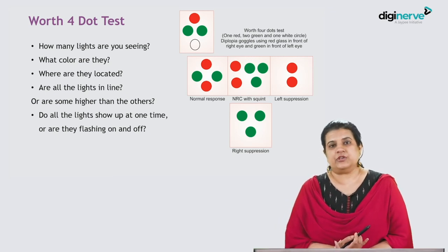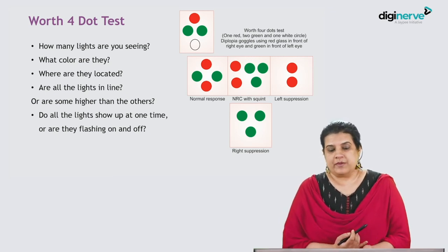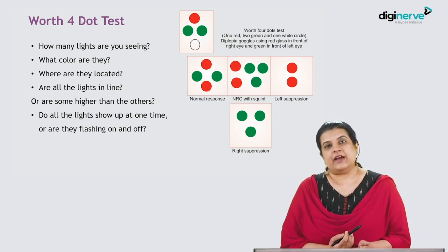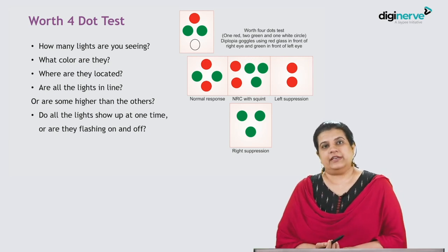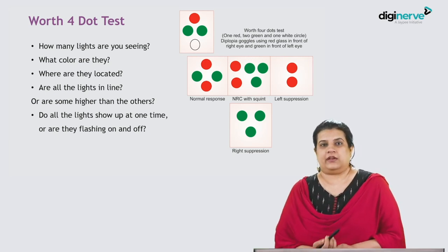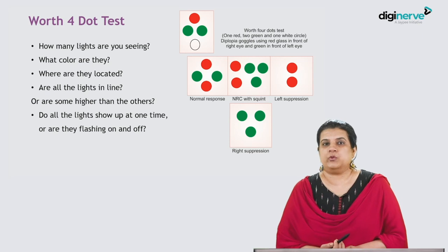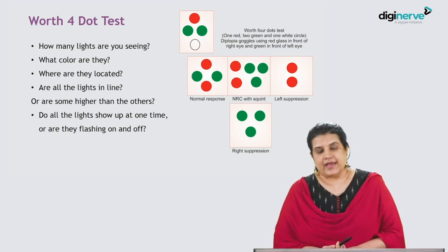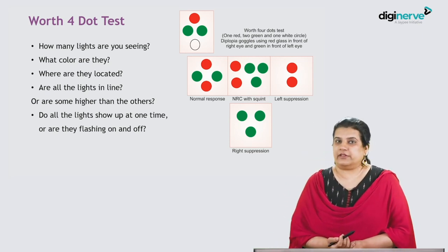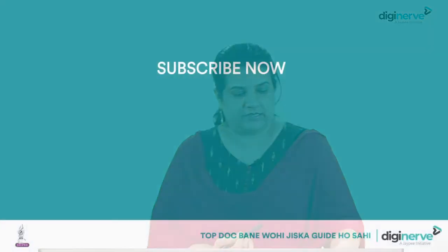If there is suppression of the left eye — which had the green lens — the green lights will not be acknowledged and only the red lights from the right eye will be seen. If there is suppression of the right eye — which had the red glass — no red color would be seen and only three green lights will be visible.